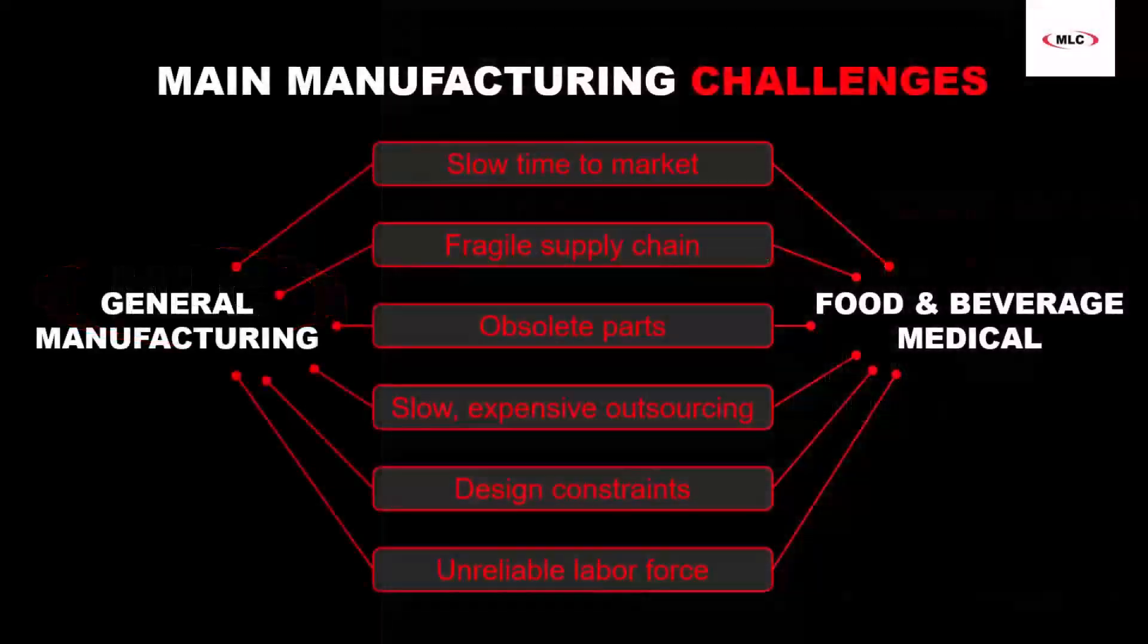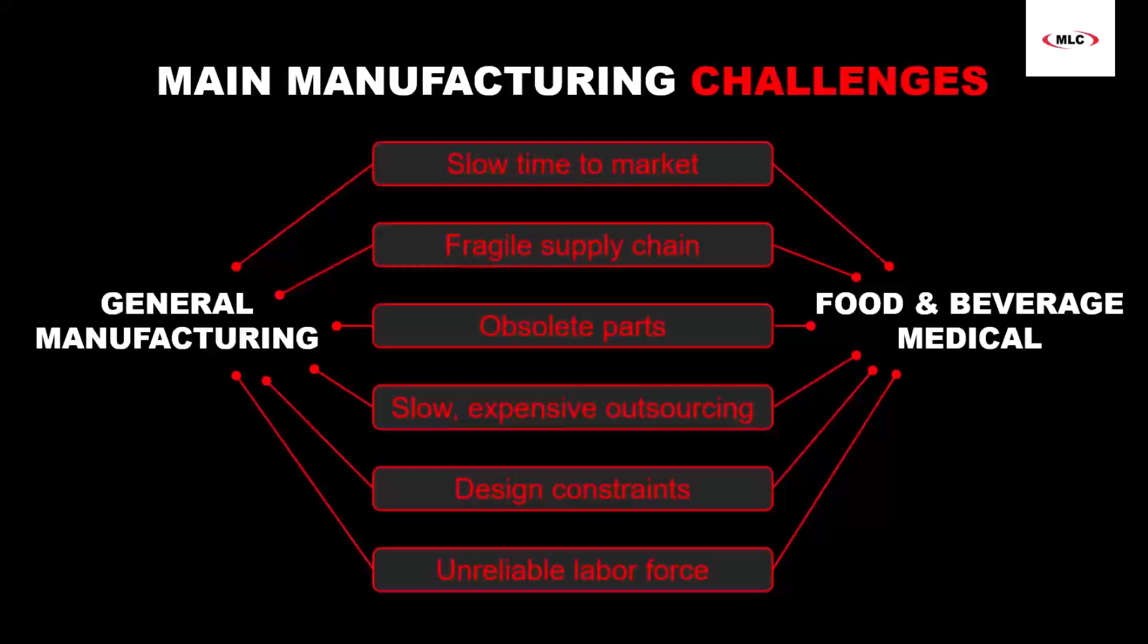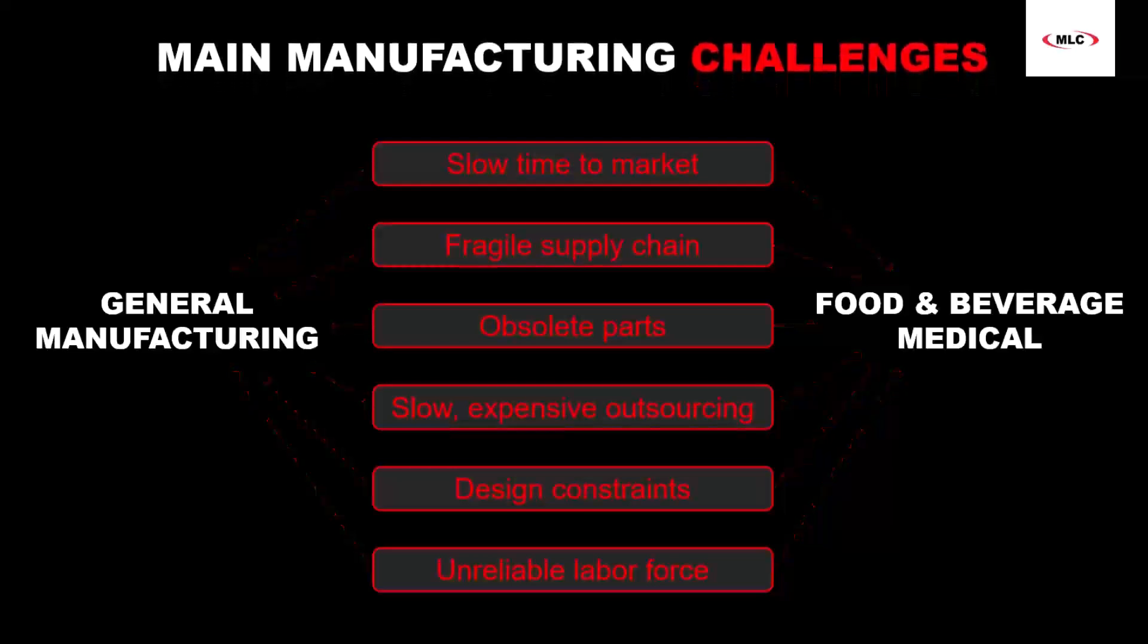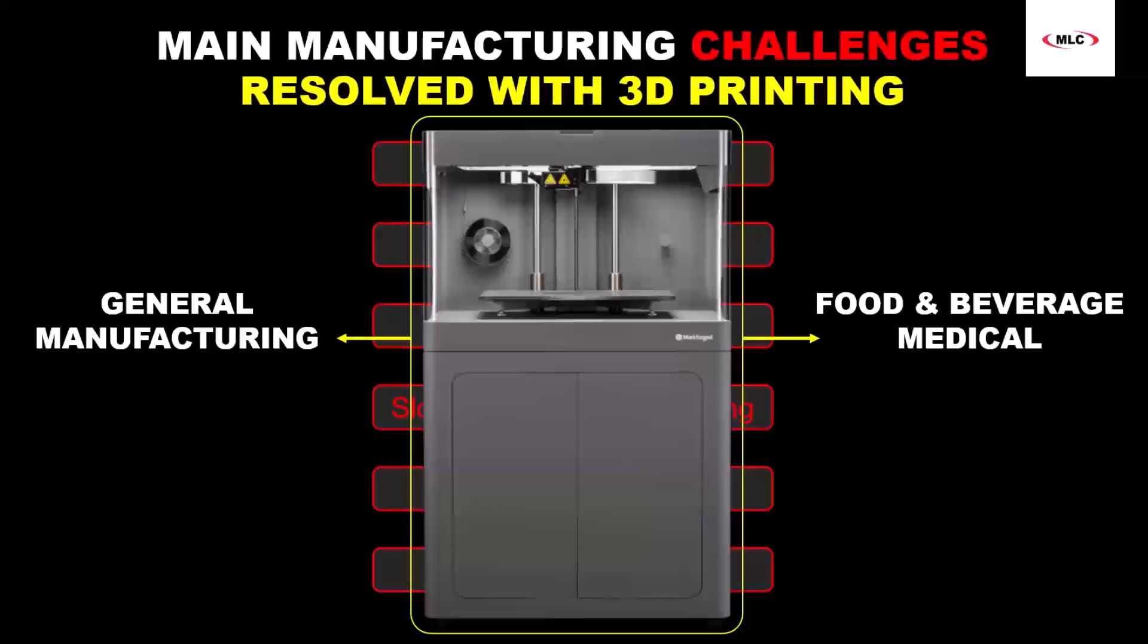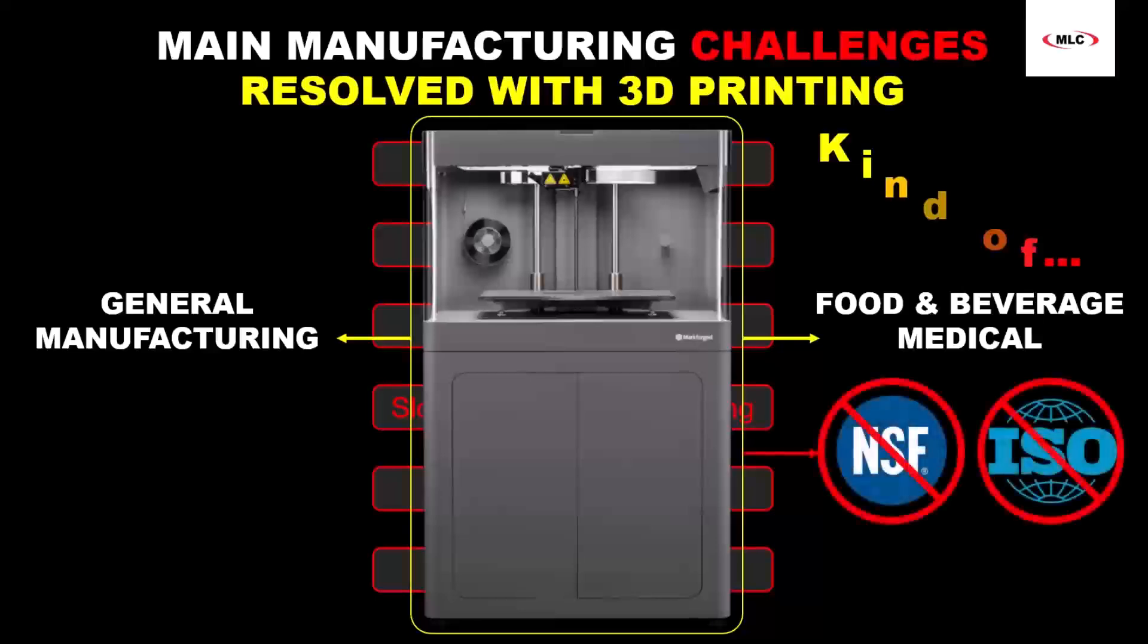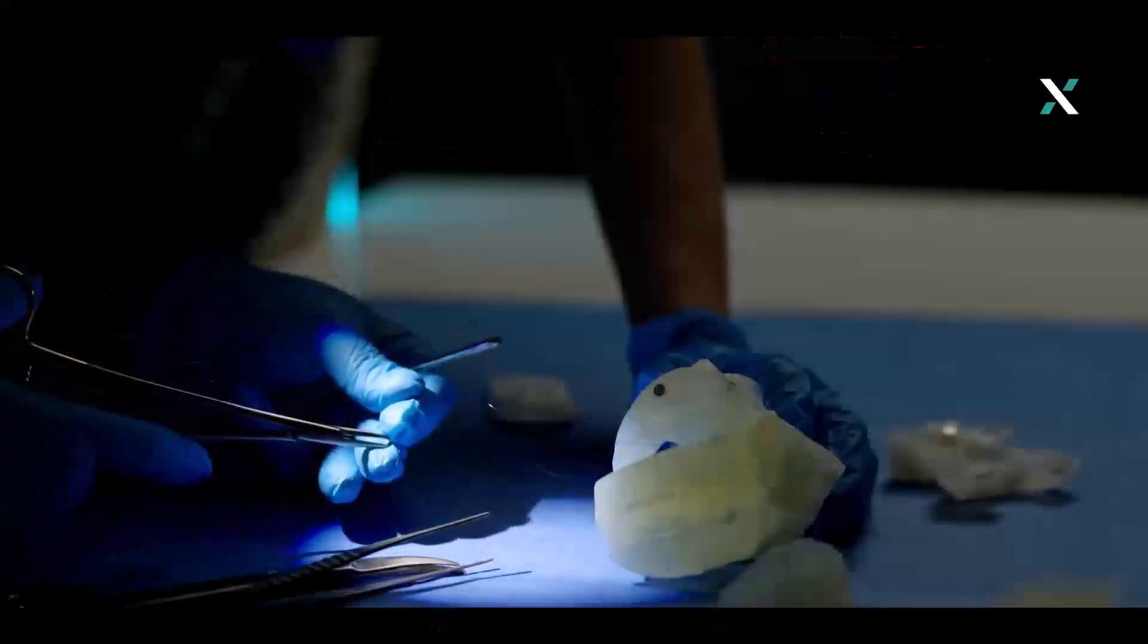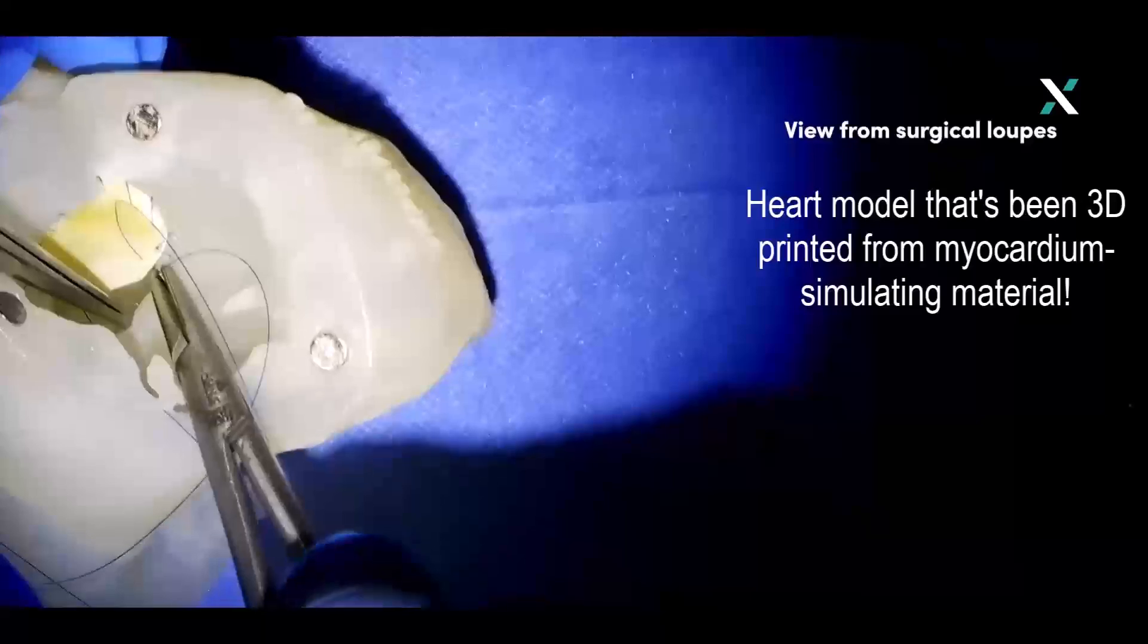Both of these industries experience many of the same challenges that general manufacturers deal with, challenges that can easily be resolved with 3D printing in the majority of cases. However, for decades, 3D printing was not able to produce parts in these two industries because of the lack of food-safe and biocompatible materials, equipment and workflows. But we live in the 21st century now, and 3D printing has come a long way.